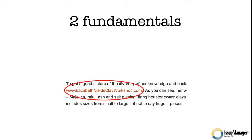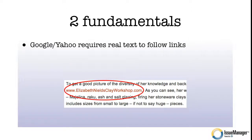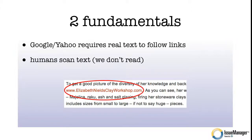The first thing to understand is there are two fundamental ways that Google, Yahoo, and the rest of the search engine world require — they require that you put real text links on your story. Google and Yahoo do not crawl through images or animations. They need real simple text that's linked in order to find the following page. The second thing is that we as humans don't read websites or online magazines — we're scanning through the text as fast as we can, looking to land on something interesting to click on and then decide to read. So we're scanners and we don't read. Keep those two things in mind.